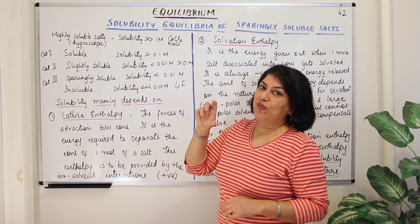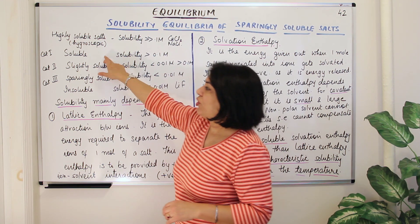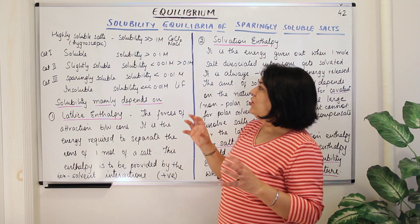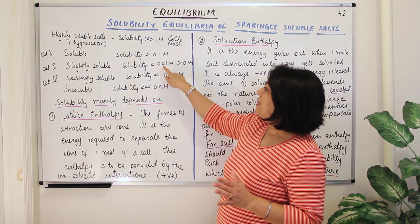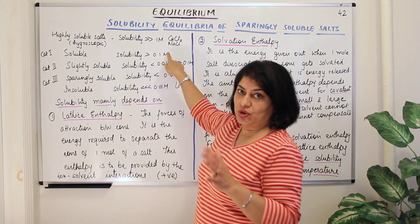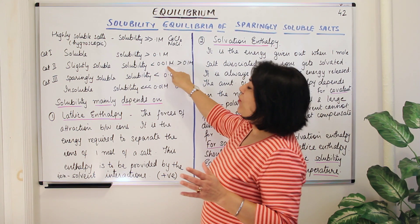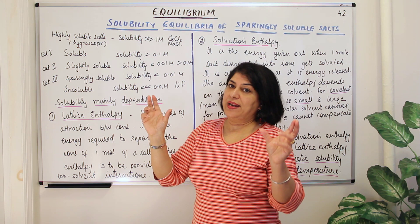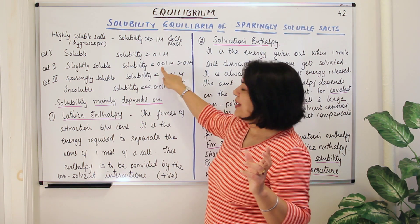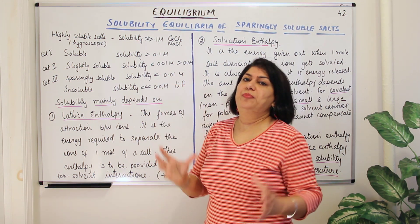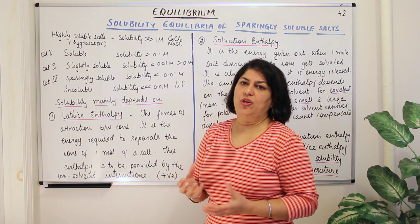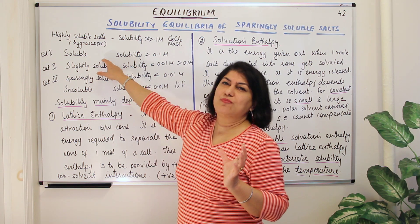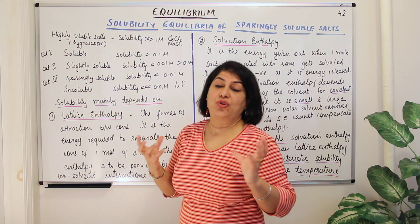The category that falls between the soluble and sparingly soluble is the slightly soluble salts. Slightly soluble salts fall between 0.1 molar and 0.01 molar. In this molarity range you wouldn't call them soluble salts — they are only slightly soluble.